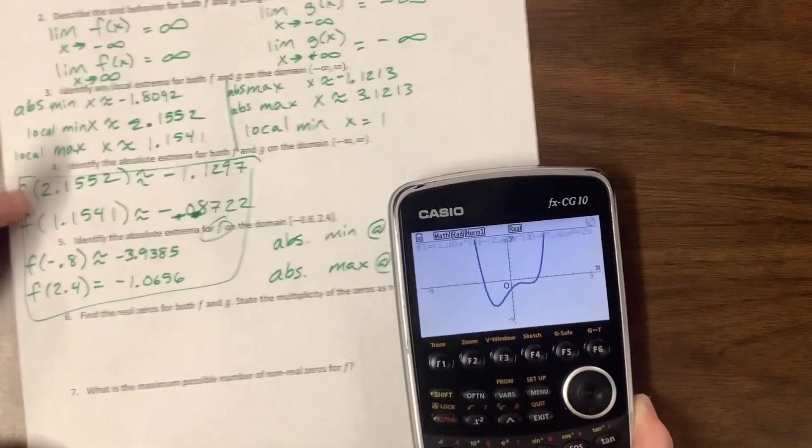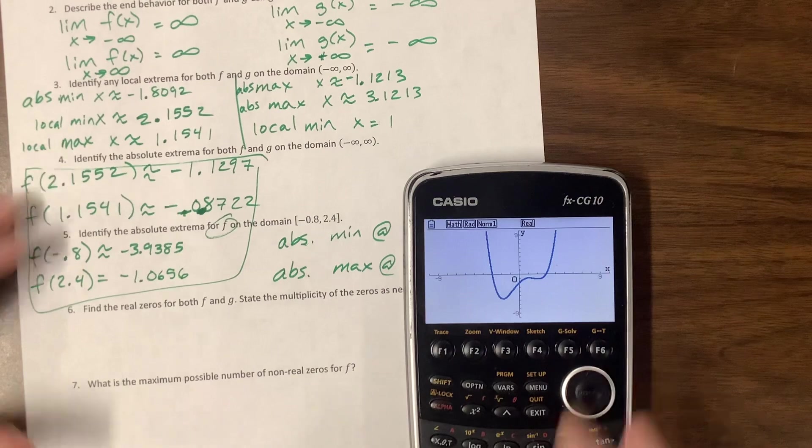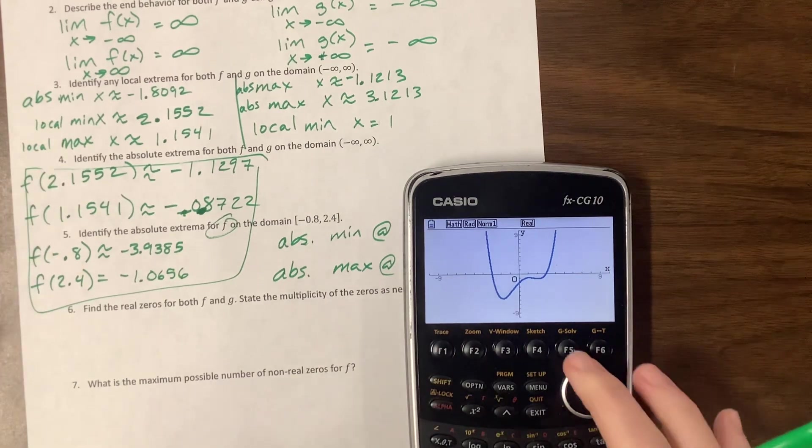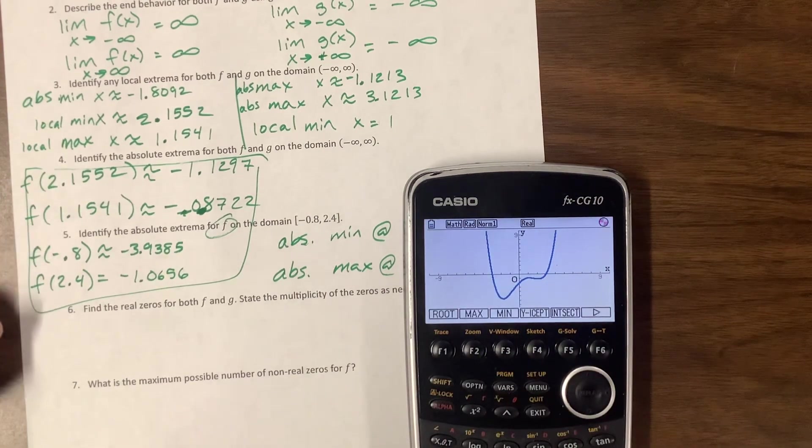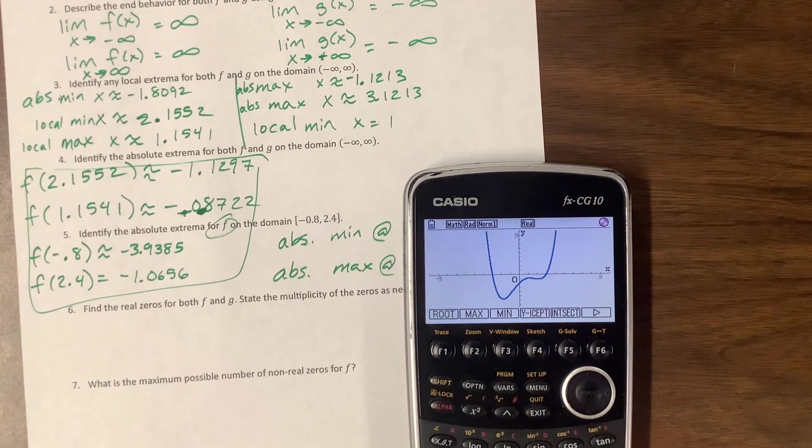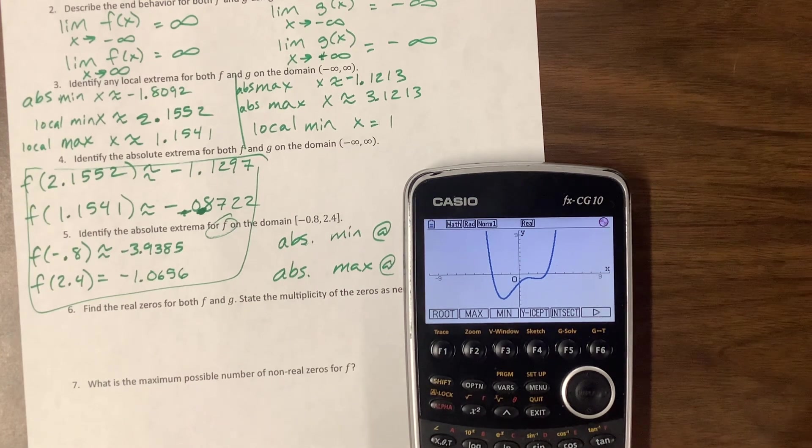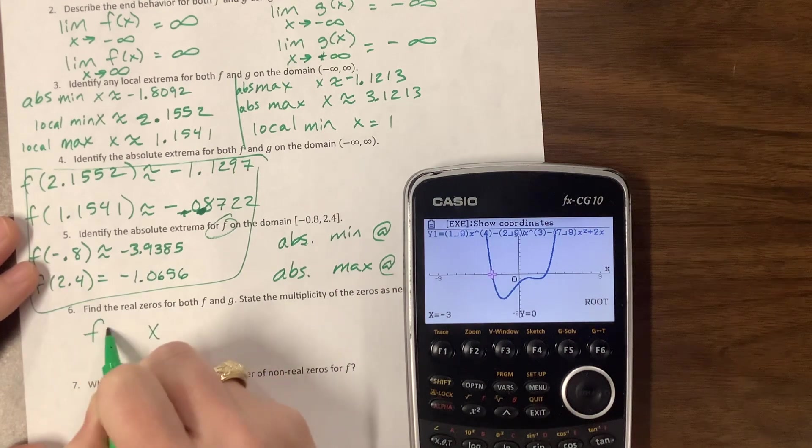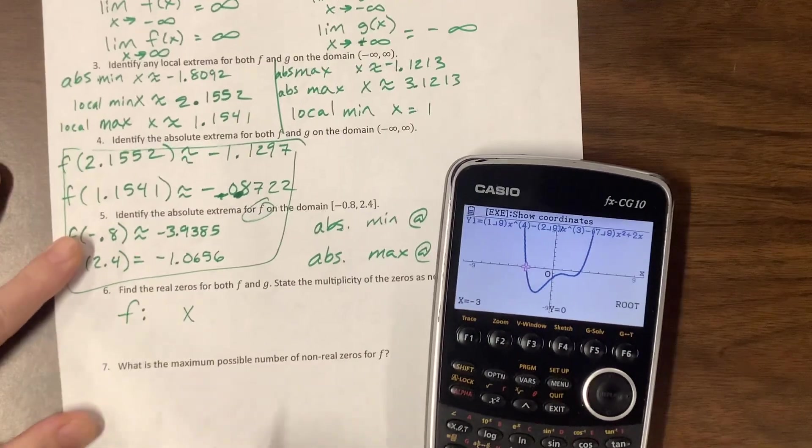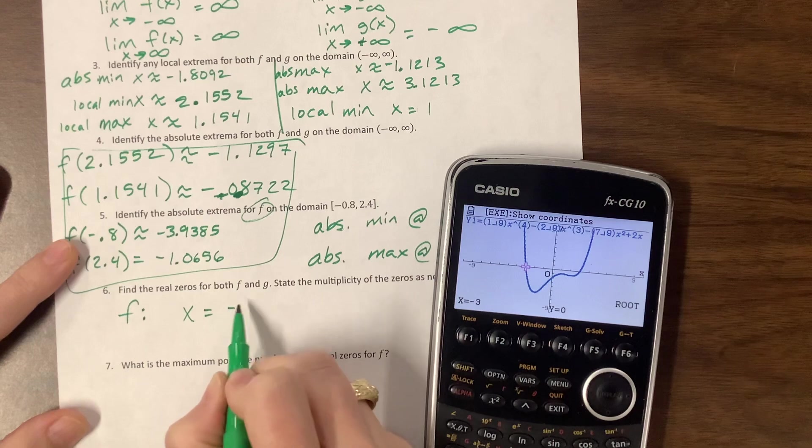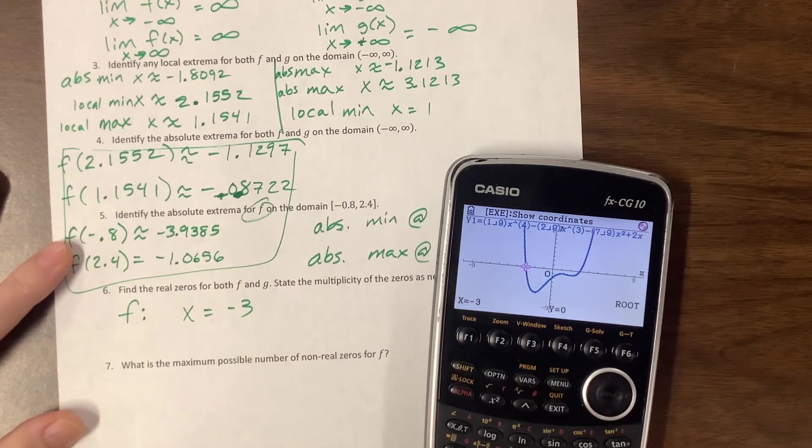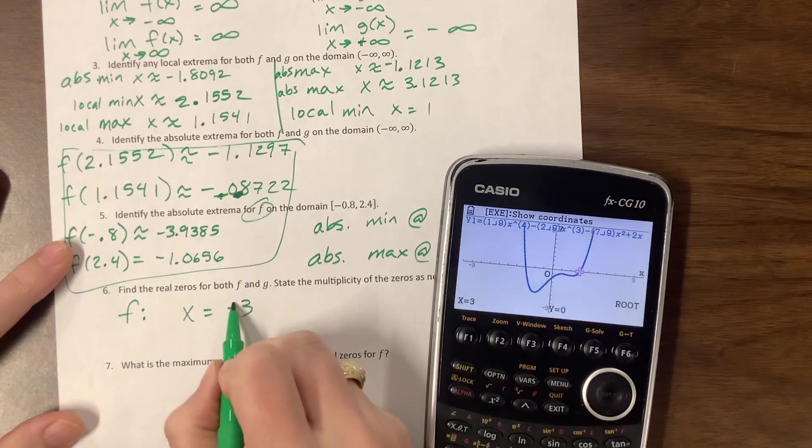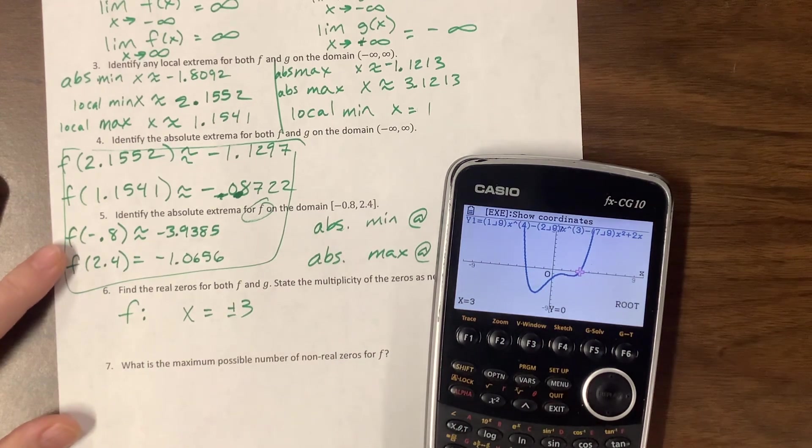So it says find the real zeros. With my calculator, that is a gross equation, but I can do G solve root. All these positives. I blame the calculator. I think I'm overworking the calculator. So I have a zero. This is for f. I have a zero when x is equal to negative three. I think the other one is positive three. It is. It's plus or minus three. So those are my zeros for f.